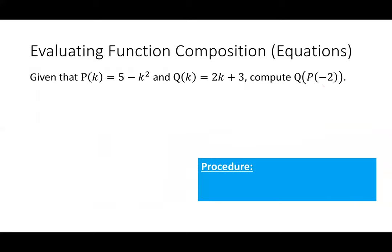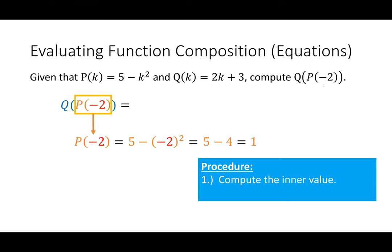Now let's consider this in regards to equations. You're going to see that it's not really any different. What I'm trying to compute here is Q of P of negative two. So again, I'm going to use the same procedure. I'm going to compute the inner value, which is going to be P of negative two, which means I'm going to plug negative two into the function P. So five minus negative two squared. Note the usage of parentheses here. So I get five minus four, that's one. So now what I'm really doing here is I'm asking you to evaluate Q of one. Well, in order to find Q of one, I take one and plug that into the Q equation and I get five. Your final answer should be five.